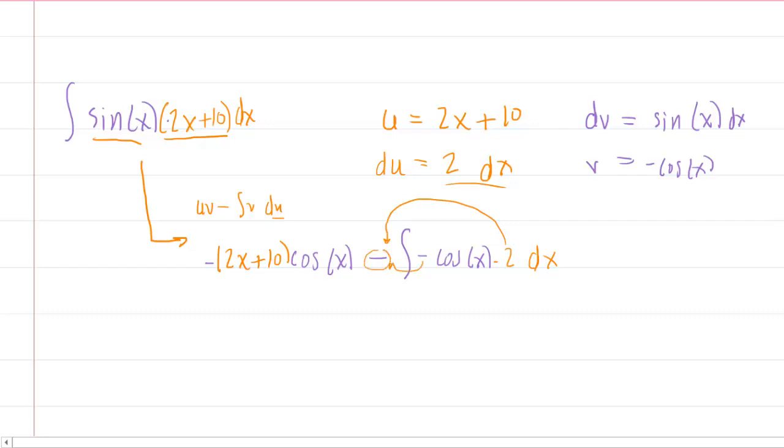Why don't we factor out the 2 to the outside as well as this negative sign? Now, because there's already a negative sign there, we're going to end up with a positive. So you'll have a positive 2 integral of cosine of x dx. And then over here, we still have the same stuff. We've got the negative 2x + 10 cosine of x.